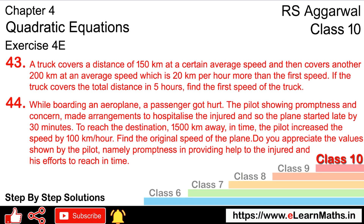Let's do question number 43 of exercise 4E on quadratic equations. Question number 43: A truck covers a distance of 150 km at a certain average speed, and then covers another 200 km at an average speed which is 20 km per hour more than the first speed. If the truck covers the total distance in 5 hours, find the first speed of the truck.